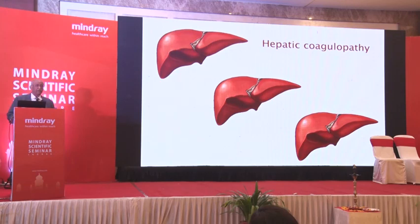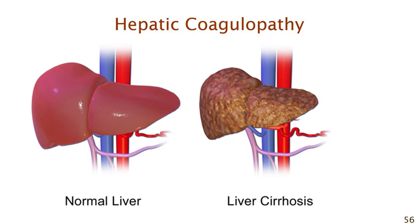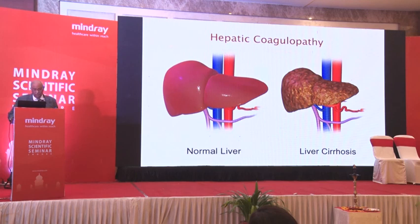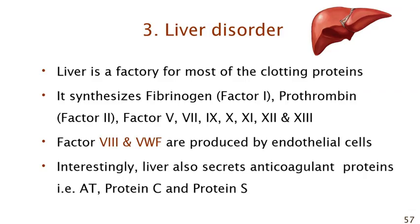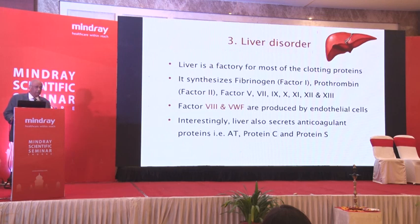The third common cause of acquired bleeding disorder is liver disease — specifically chronic liver disease, that is cirrhosis. The liver is a factory for most coagulation factors: fibrinogen (factor 1), prothrombin (factor 2), factors 5, 7, 9, 10, 11, 12, and 13 are all produced in the liver. Factor 8 and von Willebrand factor are not produced by hepatocytes — they are produced by endothelial cells. Interestingly, the liver also produces anti-clotting proteins: antithrombin, protein C, protein S, and thrombomodulin.